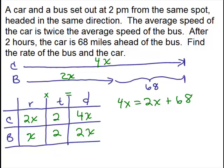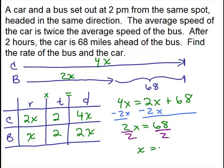So this is an equation with variables on both sides. Let's subtract 2x from both sides so we get the variables on the left side, constants on the right. And then divide both sides by 2 so we could solve for x, which is 34.